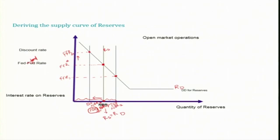This is all what we have discussed now — only the open market operations, that is the non-borrowed reserve component. We have also seen that the Federal Reserve System has more control over open market operations, that is the NBR, than the borrowed reserve. Borrowed reserve depends on the banking system's willingness to borrow. Let us now talk about the second tool, that is the borrowed reserve through the discount window.